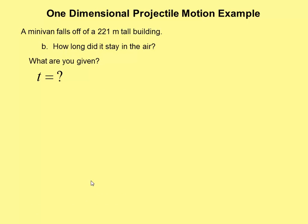Second question, what are we given? Well, we're given the vertical displacement, again, negative 221 meters. We're again starting from rest. And we have a vertical acceleration of negative 9.8 meters per second squared, because we're assuming this is freefall. Now, we could use what we found in part A, the final vertical velocity.